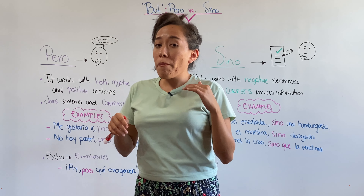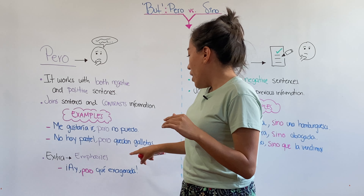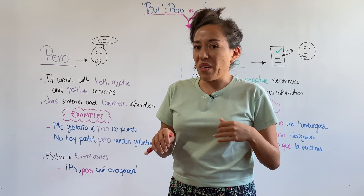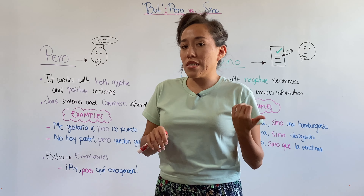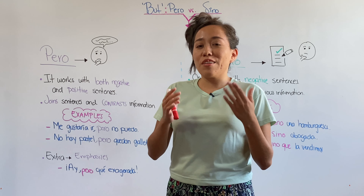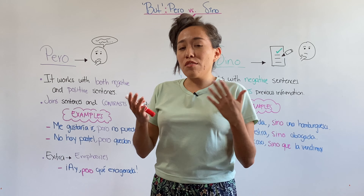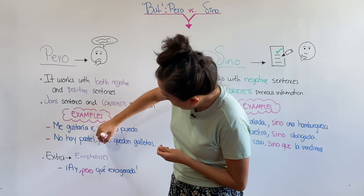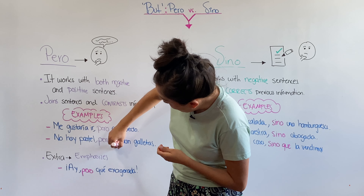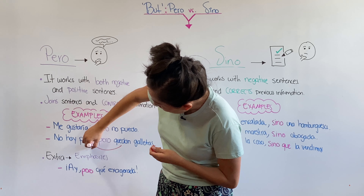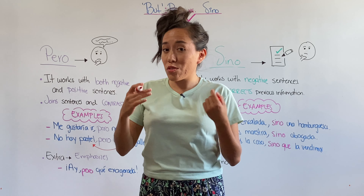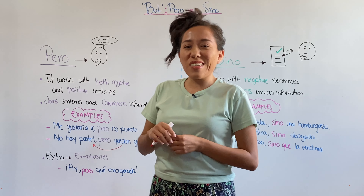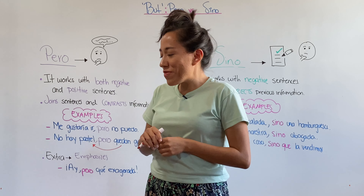Let's start with these two words. These two words are what we call conjunctions in Spanish. We use them to connect words, but also to create some contrast between the information we're saying and the information mentioned in the previous sentence. We use 'pero' with both negative and affirmative sentences.